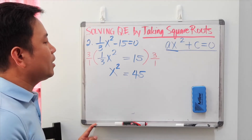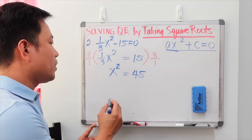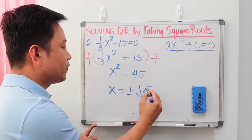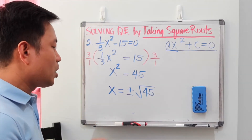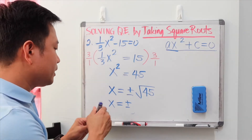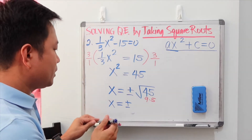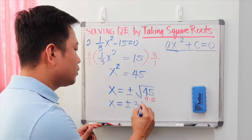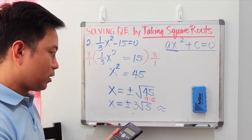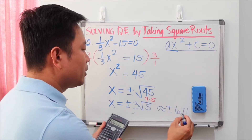To find x satisfying x squared equals 45, we take the square root of both sides using inverse operations, giving plus or minus square root of 45. Since 45 is not a perfect square, we simplify to radical form: 45 equals 9 times 5, and the square root of 9 is 3, so x equals plus or minus 3 root 5. In decimal form, that is approximately plus or minus 6.71.